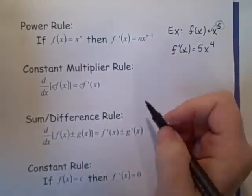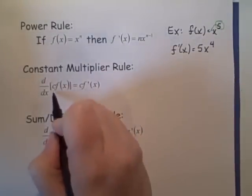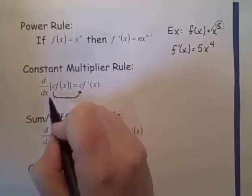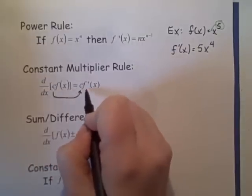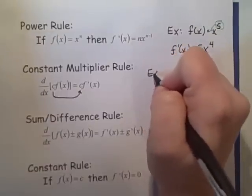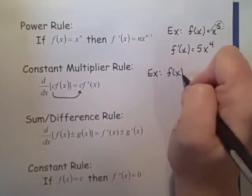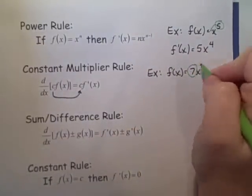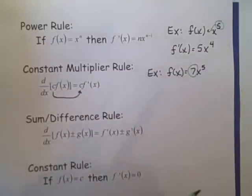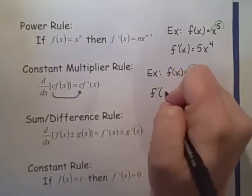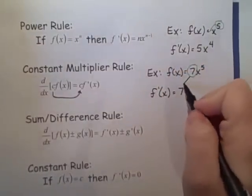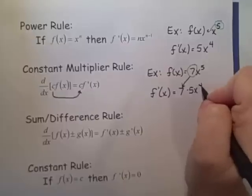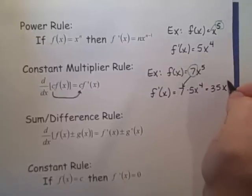Then we have the constant multiplier rule. This says if we have a constant in front of our function, the constant just gets carried along for the ride — we kind of ignore it but keep it around and take the derivative of the x part. So if I have f of x equals seven x to the fifth, this seven is like our c, so we keep that seven and take the derivative of x to the fifth, which is five x to the fourth, so we end up with 35 x to the fourth.